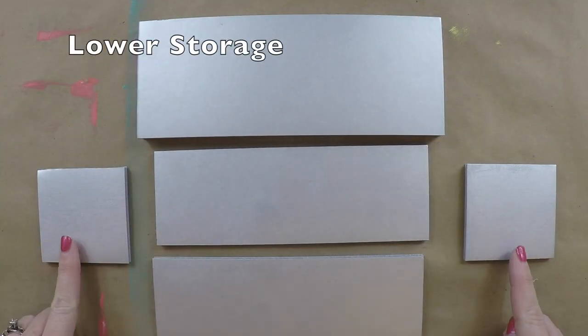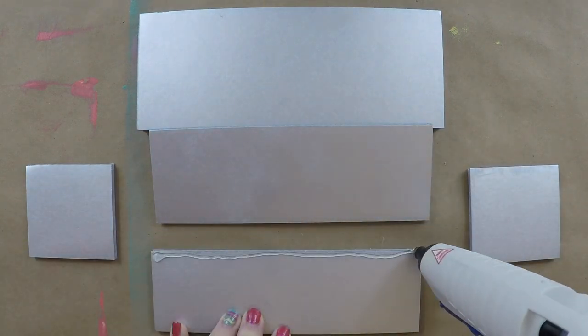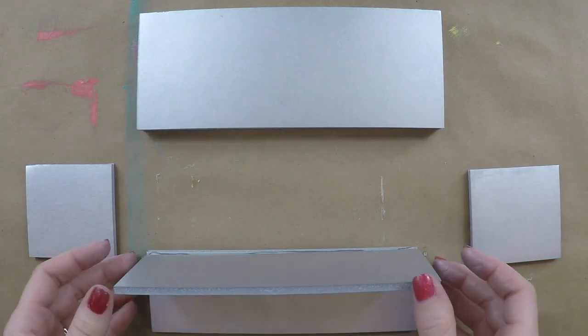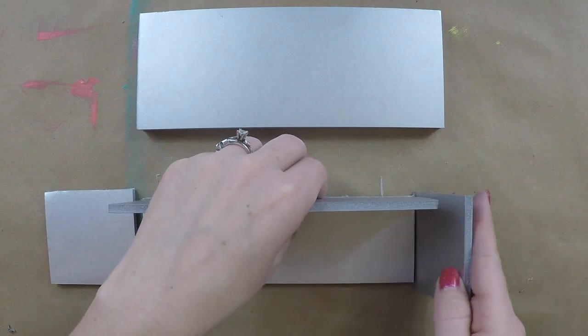For the lower storage, lay all your pieces out like this, and watch how I glue it together, so you can glue it together the right way. This is the piece that goes underneath the countertop in the back of the fruit stand.